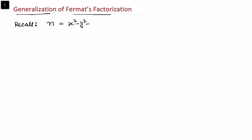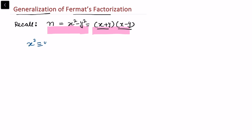In this video I'll be talking about generalization of Fermat's factorization. Before explaining this, let us recall what Fermat's factorization is. Suppose I want to factorize a large integer n. If I can write n as a difference of two squares, x squared minus y squared, then I can write it as (x+y)(x-y), giving two factors. I explained this in my last video. Now we want to extend this concept to x squared congruent to y squared modulo n.